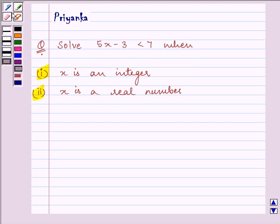So let us start with our solution. We are given the inequality as 5x minus 3 is less than 7. Now we are required to find the values of x when it is an integer and when it is a real number.